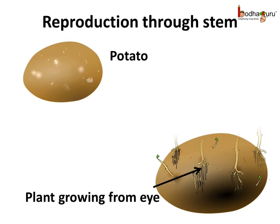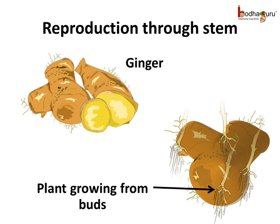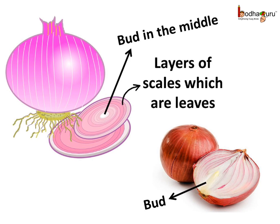Underground stems store food — like the potato, ginger, onion, etc. A new plant may grow from specific parts of these stems. For example, the potato has a small bud on its eye. Cut a potato piece with an eye and put it in the soil; if conditions are favorable, a new plant will grow. Ginger is a rhizome — a stem that grows horizontally underground and stores food — and has buds from which new plants may grow. Onion is a bulb, an underground storage organ made of stem and fleshy scale-leaves, with a bud at its center that can grow into a new plant.